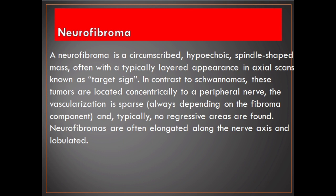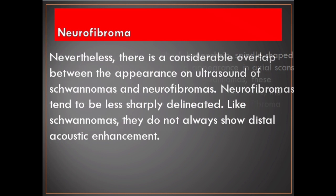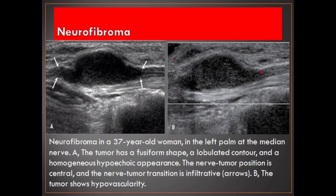Neurofibromas are often elongated along the nerve axis and lobulated. Nevertheless, there is considerable overlap between the ultrasound appearance of schwannomas and neurofibromas. Neurofibromas tend to be less sharply delineated, and like schwannomas, they do not always show distal acoustic enhancement. Neurofibroma in a 37-year-old woman in the left palm at the median nerve. The tumor has a fusiform shape, a lobulated contour, and a homogeneous hypoechoic appearance. The nerve-tumor position is central, and the nerve-tumor transition is infiltrative. The tumor shows hypovascularity.